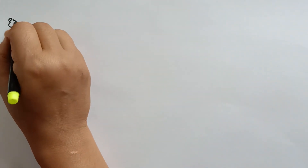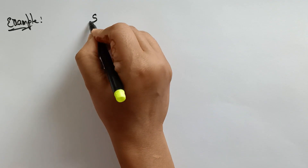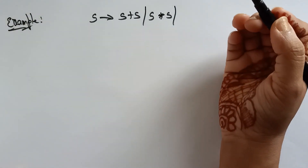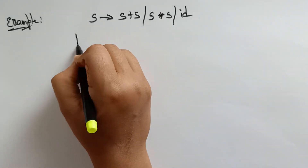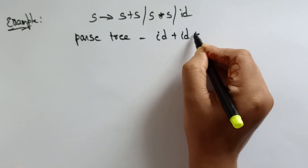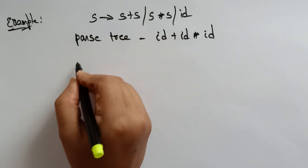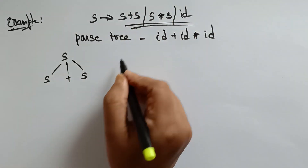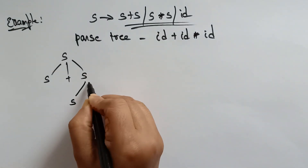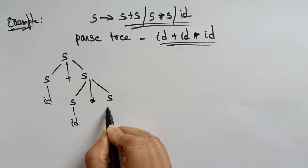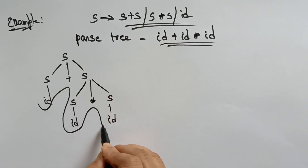Let me take one more example to explain ambiguous grammar. This time I am taking productions: s determines s plus s, s determines s star s, and s determines id. Now I need to build a parse tree by taking the input string id plus id star id. Let's first construct the parse tree: s is replaced with s plus s, and this s I can replace with s star s, then replace s with id, giving id plus id star id.